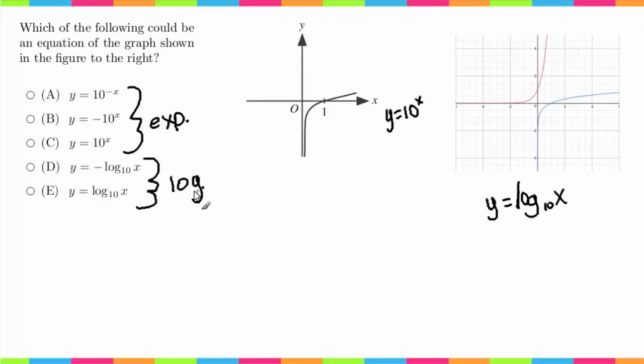The other way we could do this is we could recognize that the x-intercept is 1 comma 0, and we could plug it into each of these functions. Or sorry, we could plug in 1 for x to each of these and figure out when we get 0 for y.